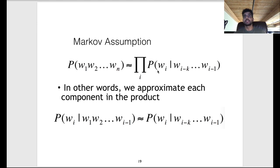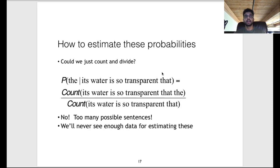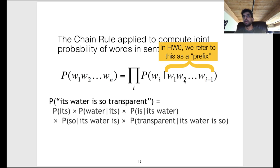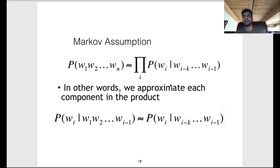More formally, the Markov assumption allows us to approximate conditioning on the full prefix w1 through w_{i-1} by instead conditioning on just the last k words, from w_{i-k} to w_{i-1}. This ensures a fixed-size prefix for every word we predict. We ignore all words beyond the last k, hoping that a reasonable value of k for our dataset enables us to approximate joint probabilities fairly accurately.